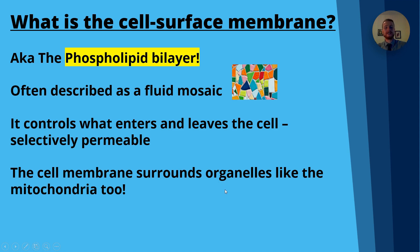It controls what enters and leaves the cell, and because of that we refer to it as selectively permeable. The cell membrane surrounds organelles like the mitochondria too, but other organelles like chloroplasts, endoplasmic reticulum, and Golgi apparatus — many of them will have a cell membrane around them. Prokaryotic cells do not have membrane-bound organelles, but eukaryotic cells do.